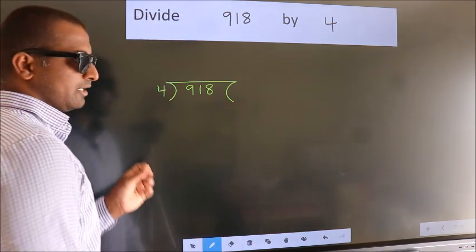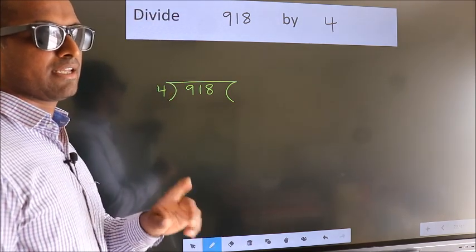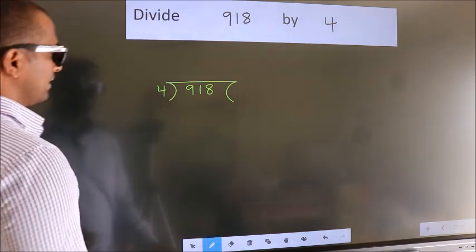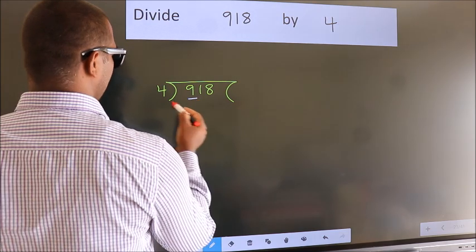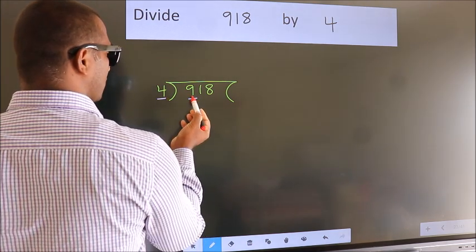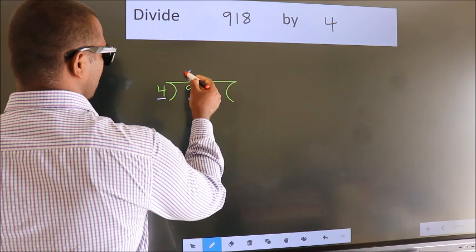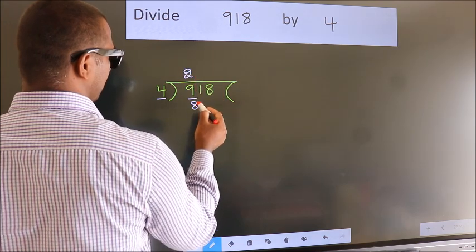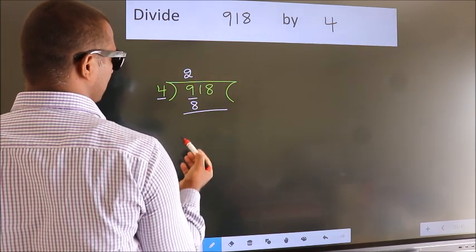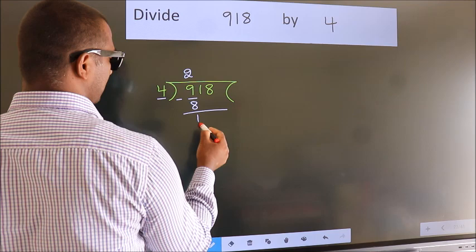This is your step 1. Next, here we have 9, here 4. A number close to 9 in 4 table is 4 twos, 8. Now, we should subtract. We get 1.